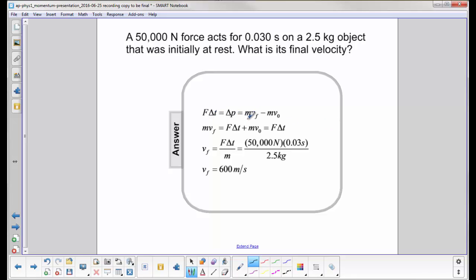We then expand that out where it's the mass times final velocity minus mass times initial velocity. Since we are interested in the final velocity, this term here, we have to isolate that variable. So we have mvf is F delta t plus mv0.